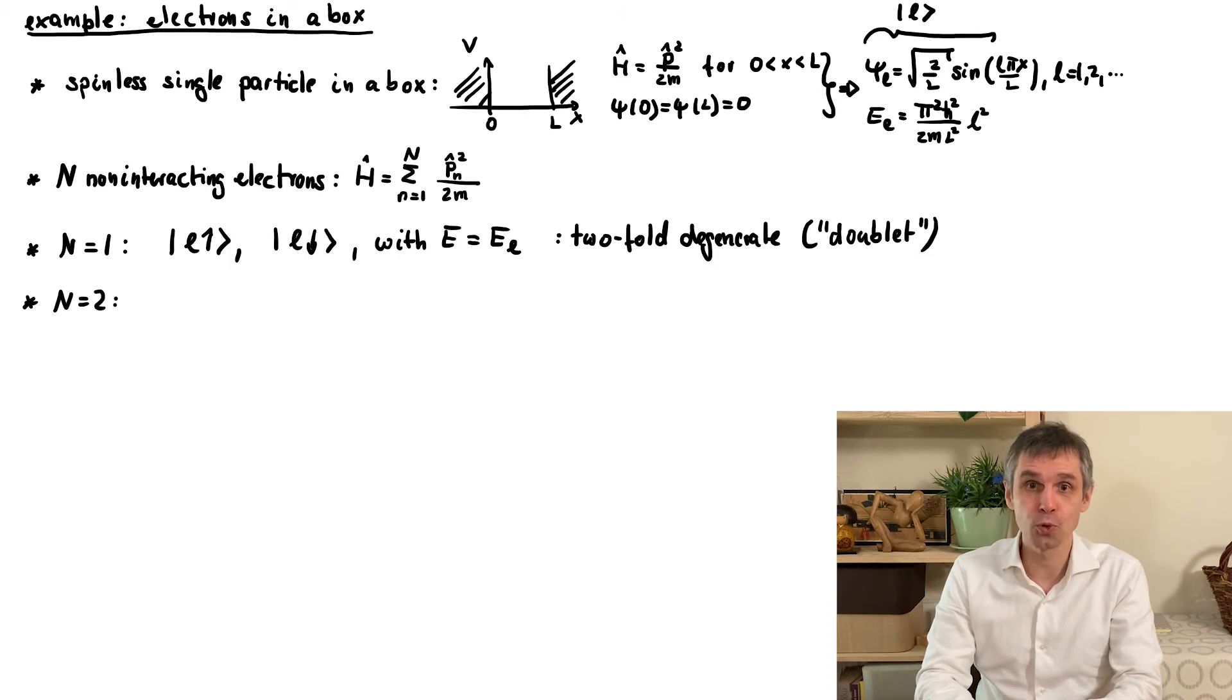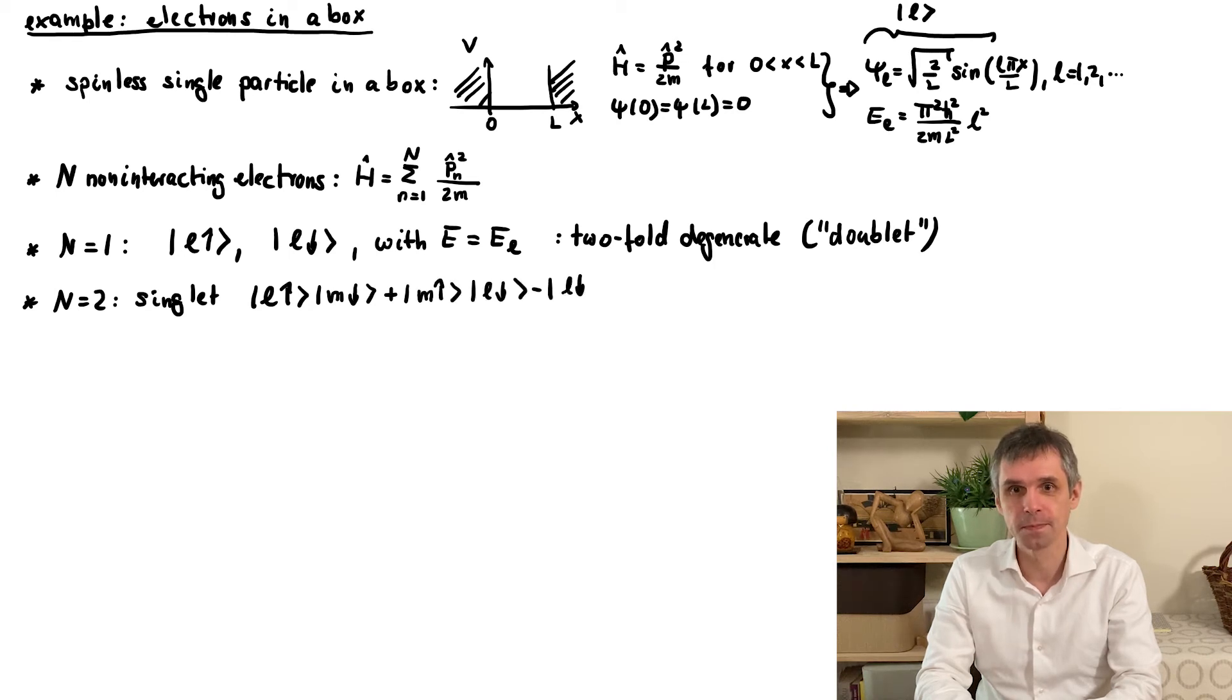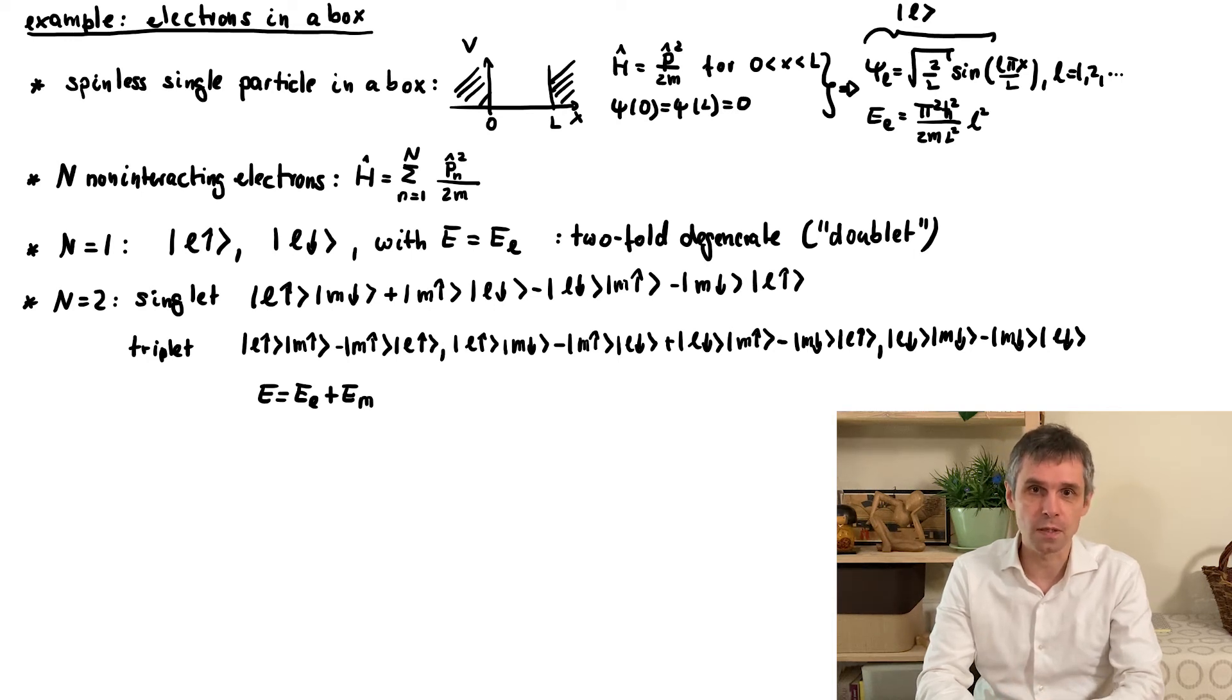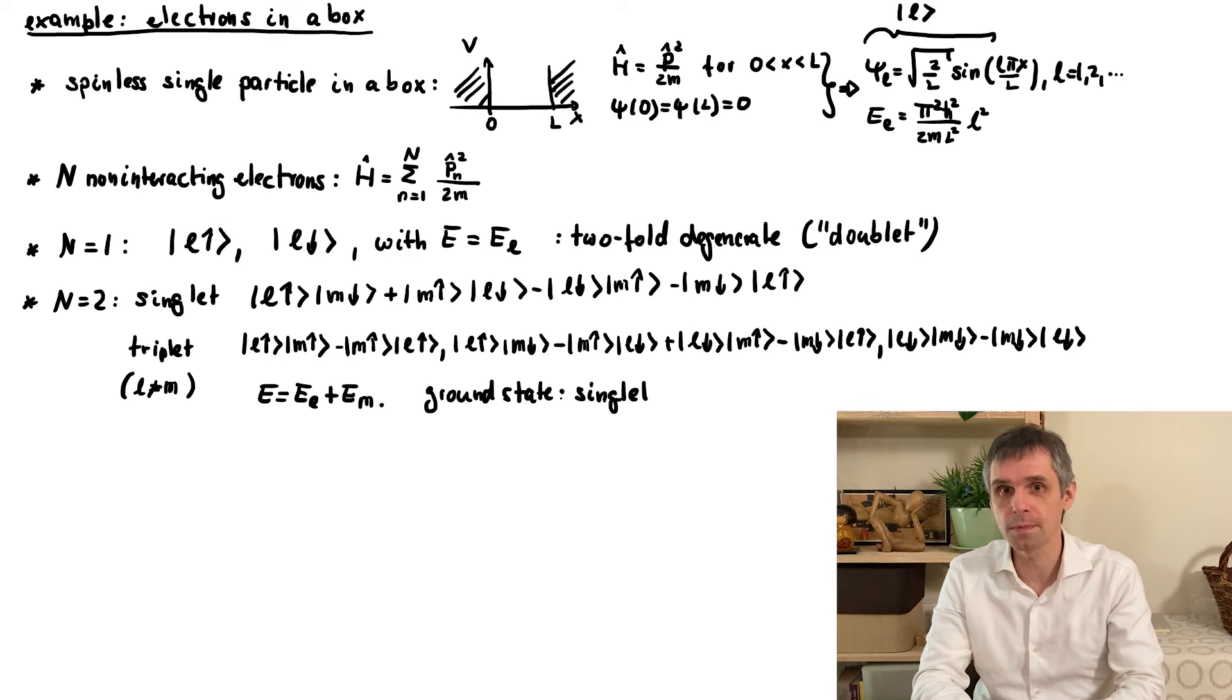Next, for two electrons occupying two different orbital states, we obtain four states, which I write here in Dirac notation. We can write these as singlet or triplet states, as specified here. In all cases, the total energy will just be the sum of the orbital energies, so here all these states are degenerate. When the electrons occupy the same orbital, then their spin must be anti-symmetric, so this only gives us the singlet state as written here. The ground state will be such a singlet state, as this allows us to occupy the single-particle ground state twice. So now the ground state is non-degenerate.